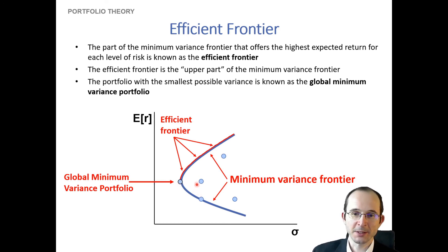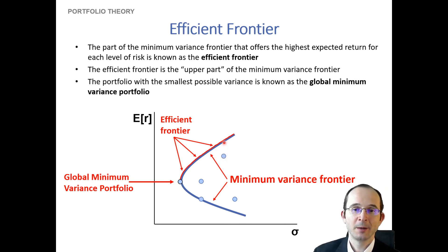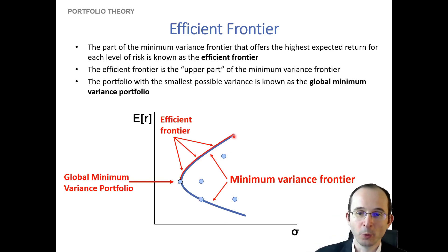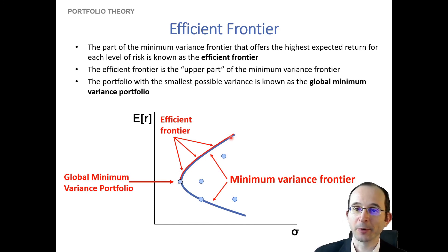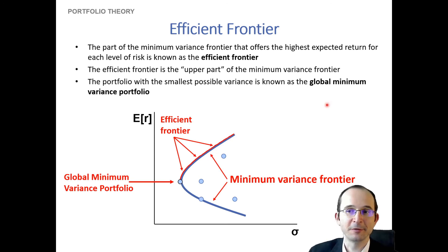Individual securities within the frontier are also mean-variance dominated, because for any security's level of risk on the horizontal axis, we can do substantially better in terms of return by moving up to the frontier. So what we've learned is that we really want to make our investments somewhere along this curvilinear parabolic shape that sweeps out the possible expected returns and standard deviations for combinations of our risky assets.